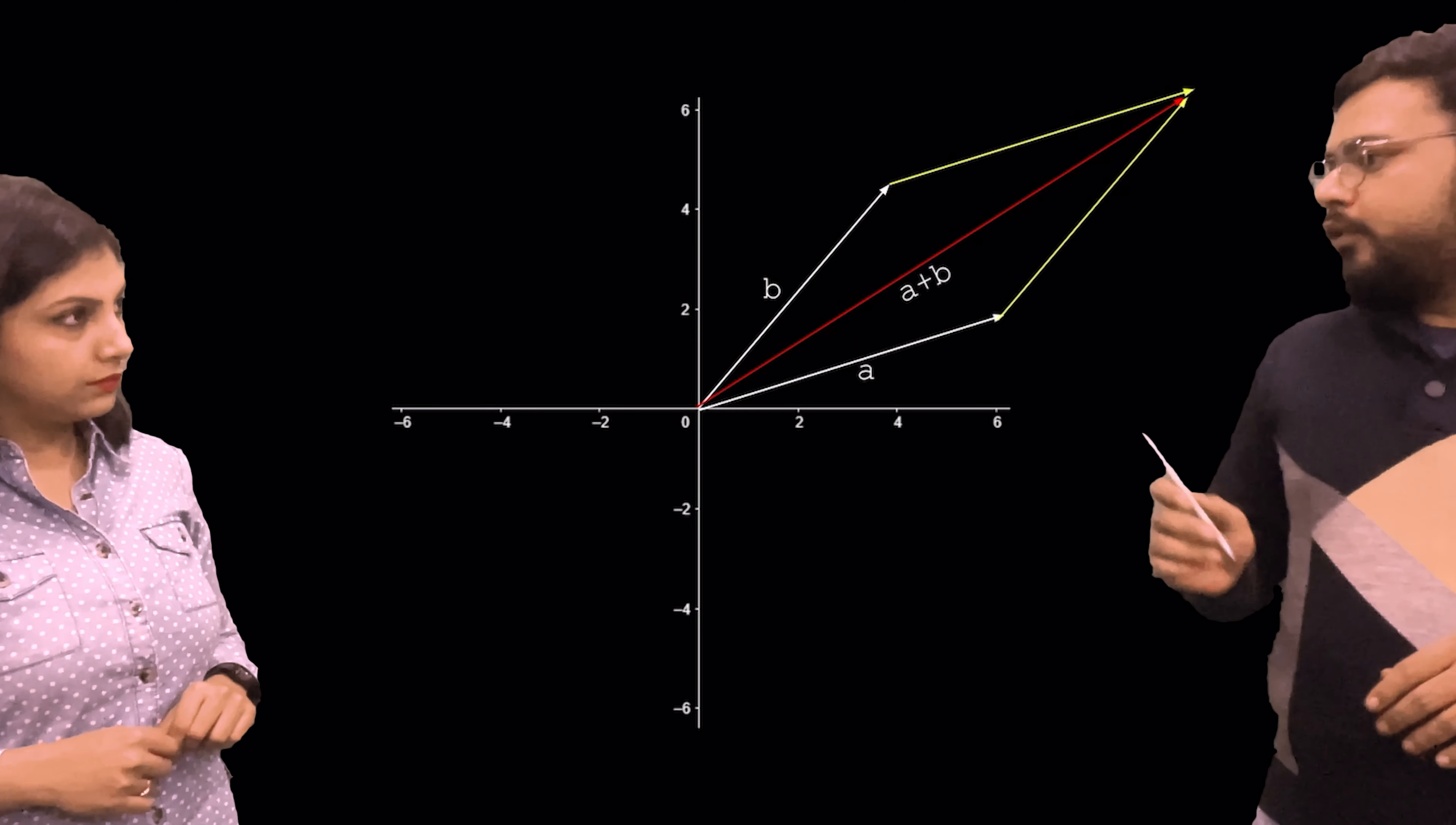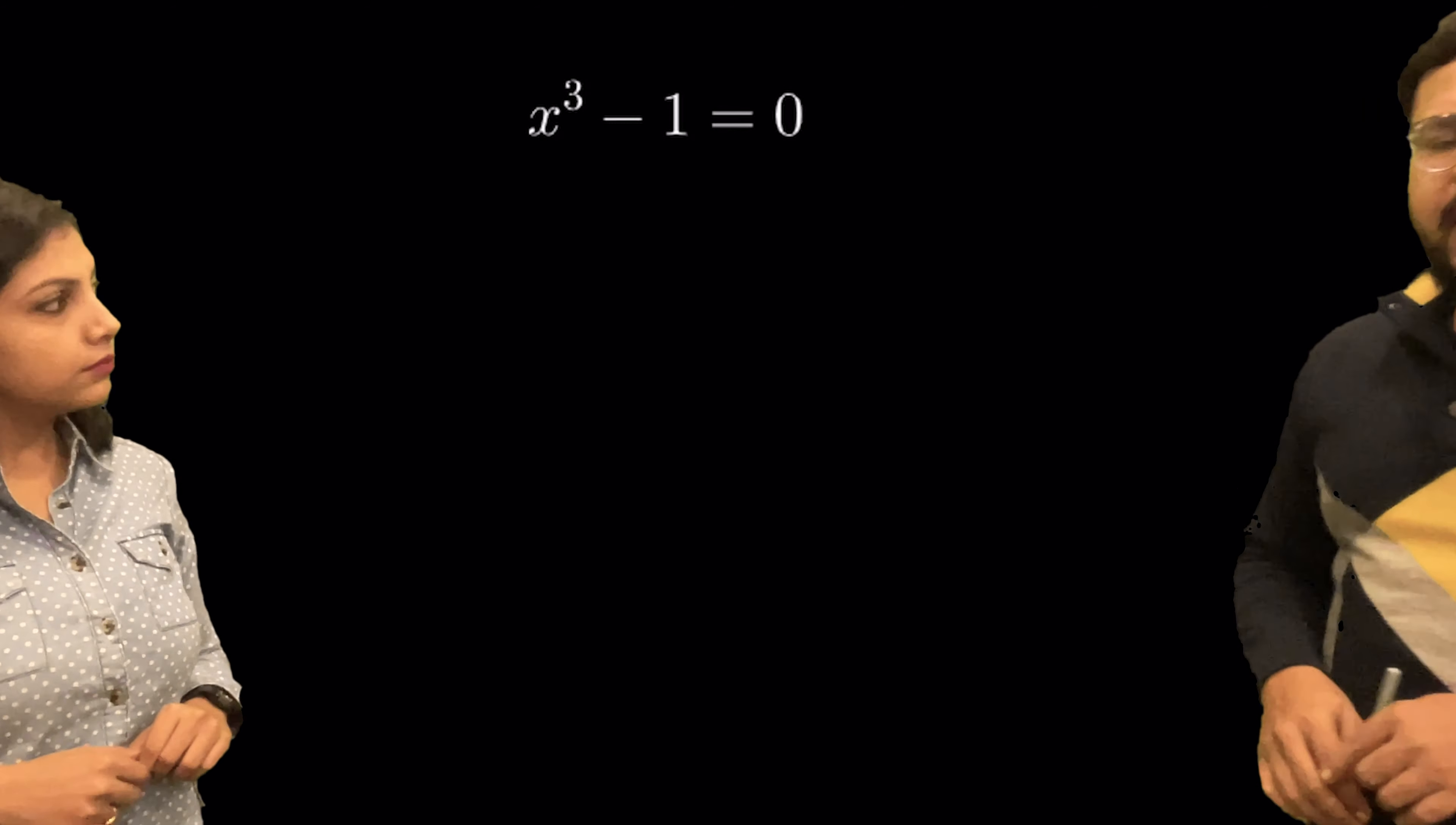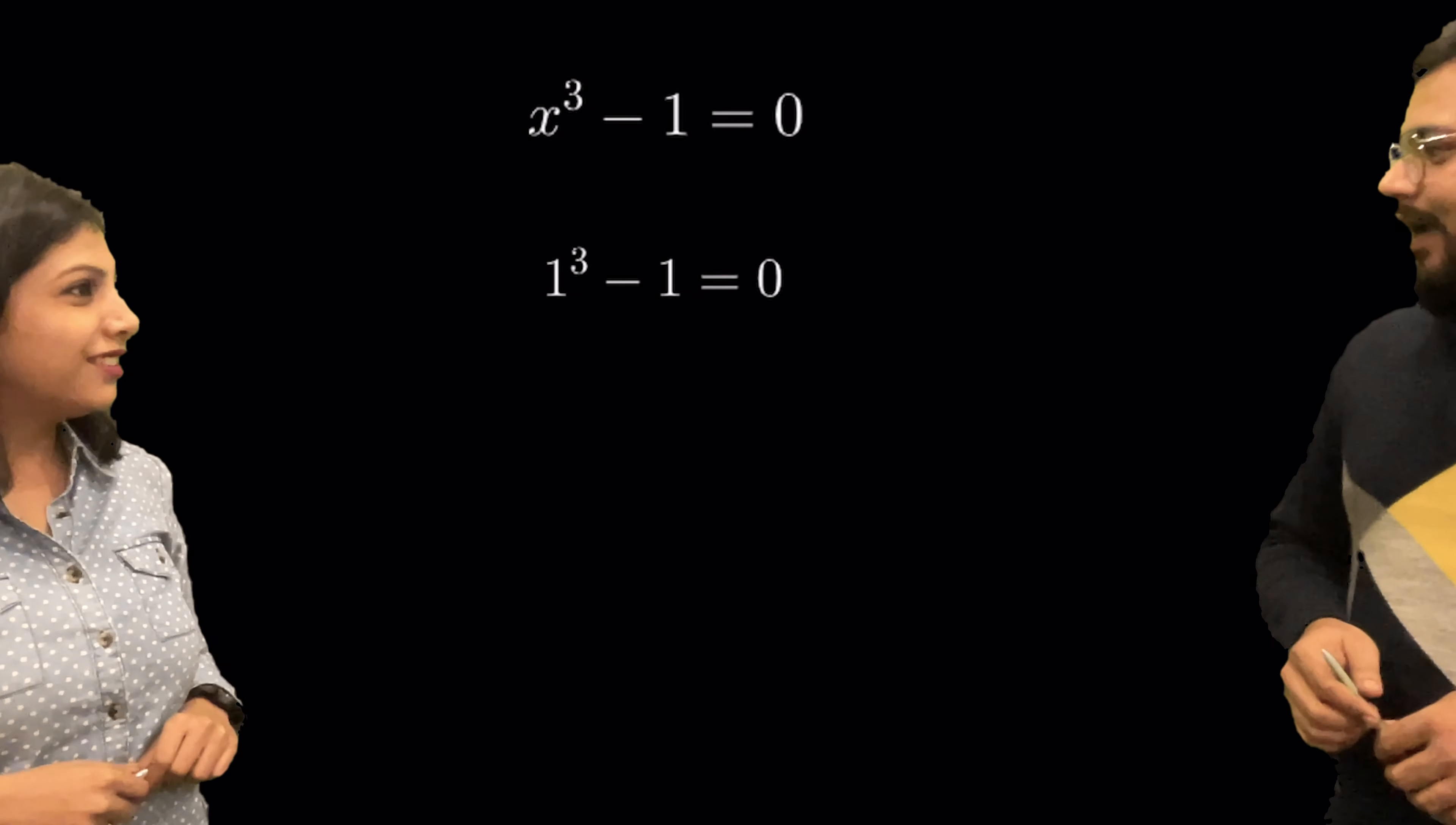Let us now talk about the cube roots of unity. See this equation here. X cube minus 1 equal to 0. Can you tell me one solution of this equation? Yeah, it is very simple. The answer is 1. Right.